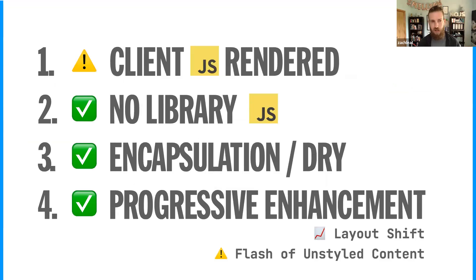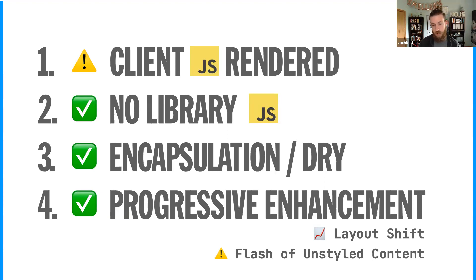This comes with client-rendered components — shadow DOM by itself is client rendered. We use JavaScript to inject the shadow DOM content into the individual component instances. But we get the same benefits as before: there's no library JavaScript, we have full encapsulation from the shadow DOM, we don't have to repeat ourselves across component instances, and we get a progressive enhancement strategy with fallback content if the JavaScript doesn't load — though it is subject to layout shift and the flash of unstyled content.